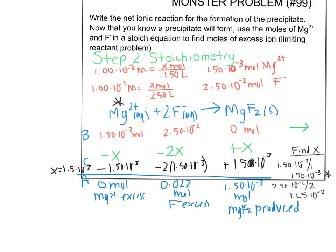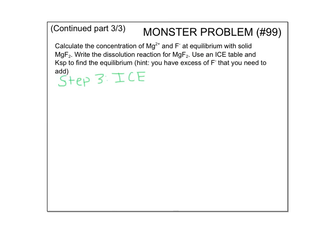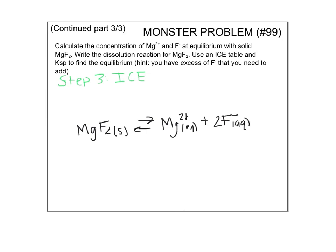This problem doesn't ask for mass, but you'd just do mole-to-gram conversion using molar mass. Part two is done. The last step is to use an ICE table to find concentrations at equilibrium. We go back to our dissolution reaction: MgF₂ solid ⇌ Mg²⁺ (aq) plus 2F⁻ (aq). We don't include the solid in the ICE table.